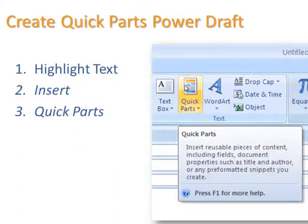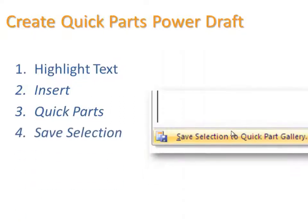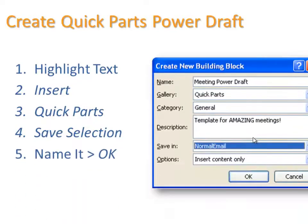Next, you'll click on Quick Parts, and all the Quick Parts that you've saved would normally drop down at this time. Look at the bottom and you'll see Save Selection of Quick Parts Gallery — it's your Save button. Click there, and simply type in a name for this Quick Part.